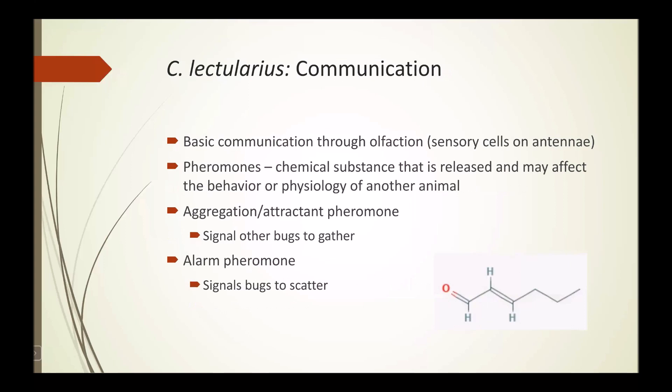They communicate through their sense of smell — their sensory cells for smell are kind of on antennae. There are different types of chemicals they release called pheromones: chemical substances released that may affect the behavior or physiology of another animal. One type will signal bugs to gather — come on over. There's another pheromone that causes them to scatter — a fear or alarm signal.